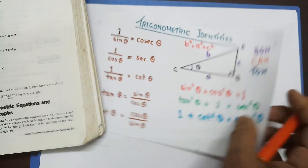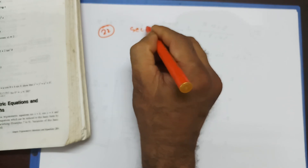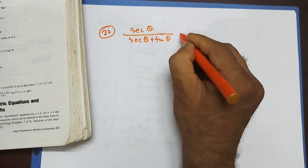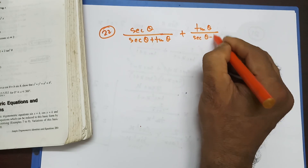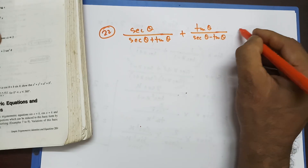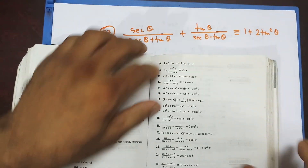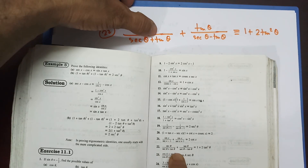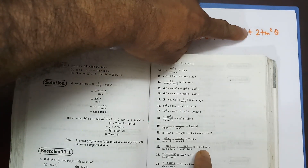Question 22 says: sec θ over (sec θ + tan θ), plus tan θ over (sec θ − tan θ), is identical to 1 + 2tan²θ. That's what I'm going to do in this video.